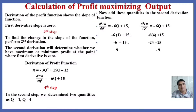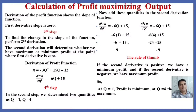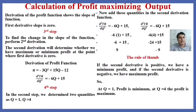Which quantity assures the maximum profit? The rule of thumb is that if the second derivative is positive, we have a minimum profit, and if the second derivative is negative, we have a maximum profit. This is because when profit is maximum, output declines and marginal cost increases. Therefore, minus 9 assures the maximum profit, meaning at quantity 4 the profit is maximum.